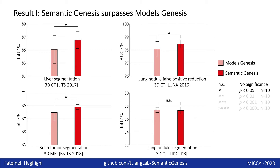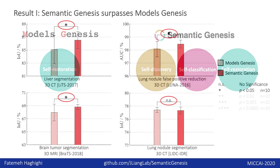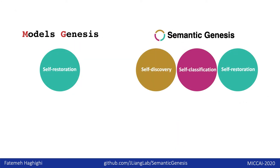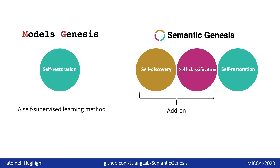So, our semantic genesis outperforms models genesis in several 3D medical applications. As seen, the red bar is our semantic genesis and the light pink one is models genesis. The second difference is that models genesis is just a self-supervised learning method, but our self-discovery and self-classification components should be considered as an add-on because they can be added to other self-supervised learning methods to enrich their representations.